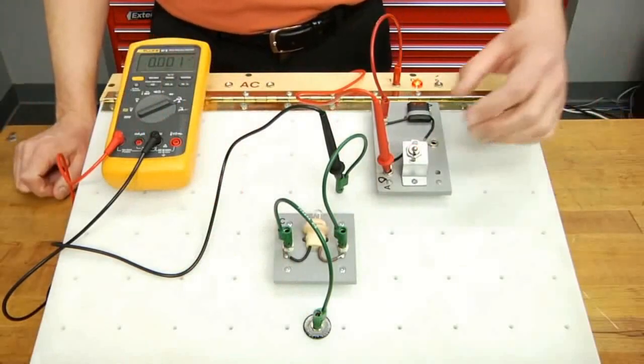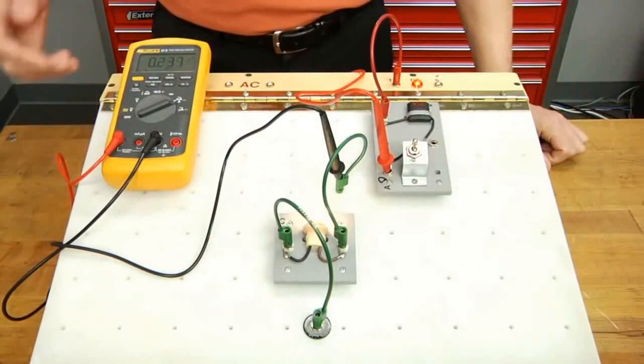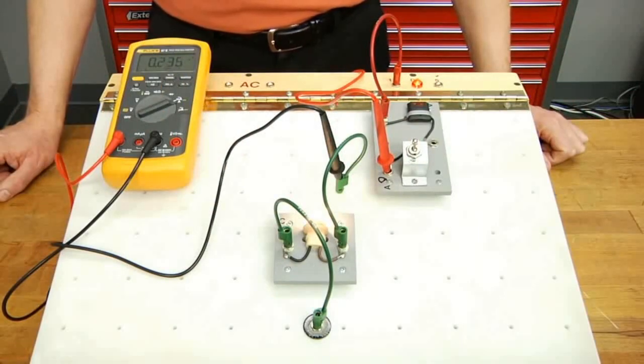At this point, we should read amperage. As you can see on our display, we are reading 0.236 amps of current through this circuit, or 236 milliamps.